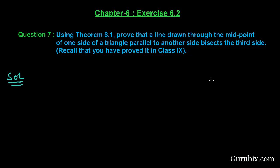This is a very interesting question. Let us solve it. First, let us draw a rough figure of a triangle. Suppose this is triangle ABC and this is point D, which is the midpoint of AB. This means AD equals DB. We have drawn a line through D which is parallel to BC and intersects AC at E.